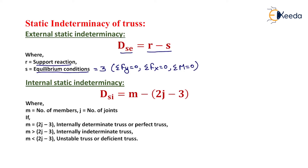For the calculation of internal static indeterminacy, the formula is M minus 2J minus 3, where M is the number of members, J is the number of joints, and 3 is a constant. If M equals 2J minus 3, the truss is known as an internally determinate or perfect truss, meaning we can determine each and every unknown parameter. If M is greater than 2J minus 3, the truss becomes internally indeterminate.